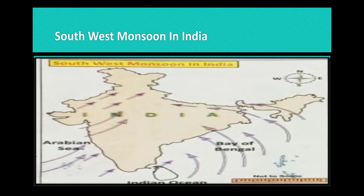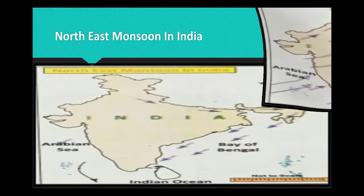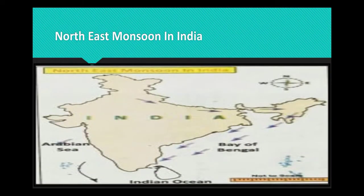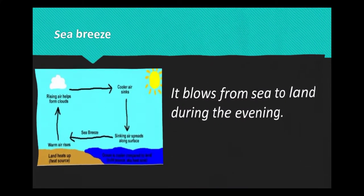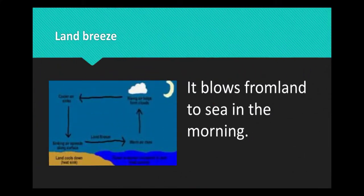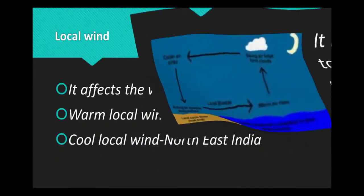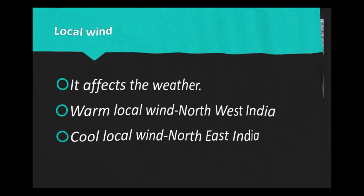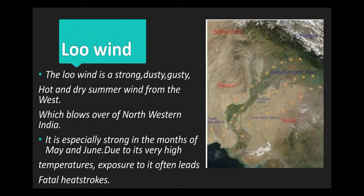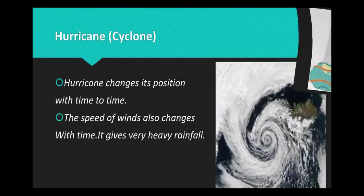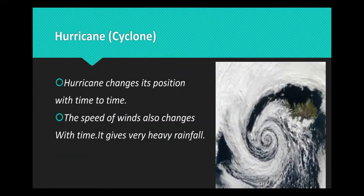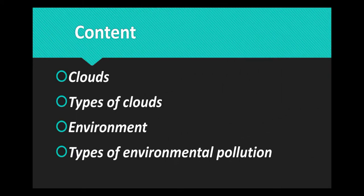Southwest monsoon in India, northeast monsoon in India, sea breeze, land breeze, local wind, low wind, jet streams, and hurricane. In this Part 4 of Atmosphere, you are going to learn clouds, types of clouds, environment, and types of environmental pollution.